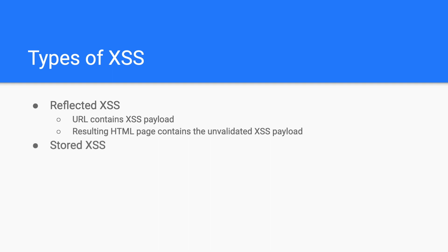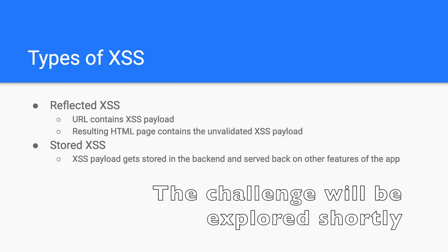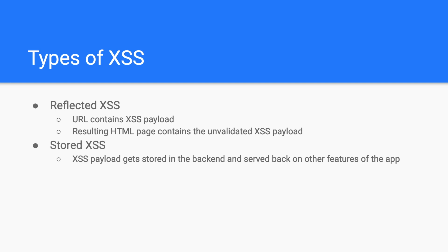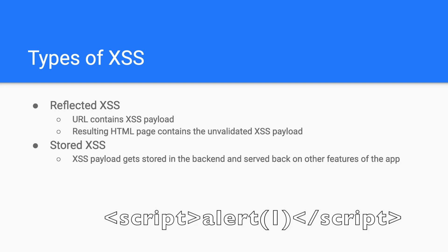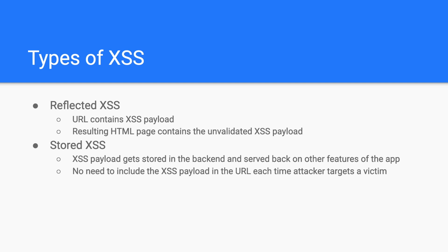The second type is stored XSS. In this type, the cross-site scripting payload gets stored in the backend and served back on another feature of the application. Consider a common feature where users comment on an article and list all the comments — an attacker injects the payload, and therefore any victim who navigates to the comment page will see a pop-up in their web browser. In this type, you don't need to include the XSS payload in the URL each time an attacker targets the victim.